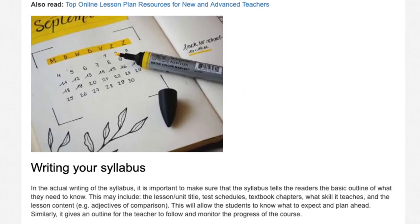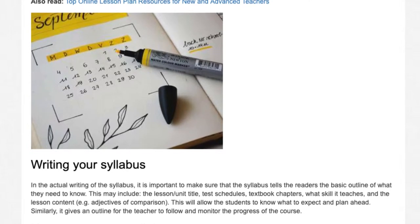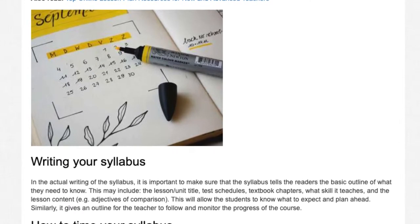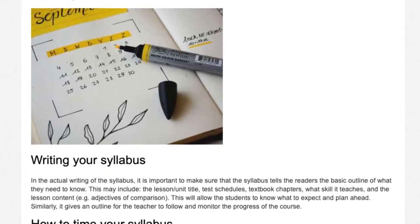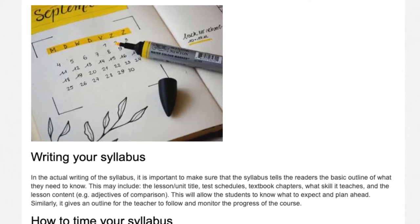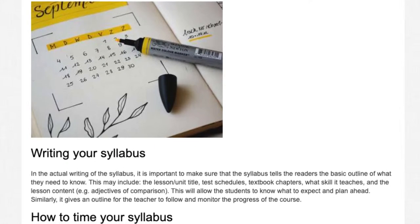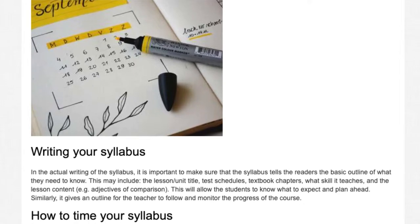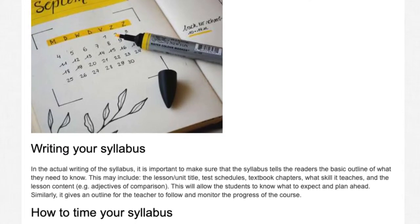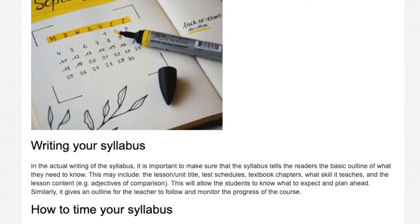Writing your syllabus: In the actual writing of the syllabus, it is important to make sure that the syllabus tells the readers the basic outline of what they need to know. This may include the lesson unit title, test schedules, textbook chapters, what skill it teaches, and the lesson content — e.g. adjectives of comparison. This will allow the students to know what to expect and plan ahead. Similarly, it gives an outline for the teacher to follow and monitor the progress of the course.